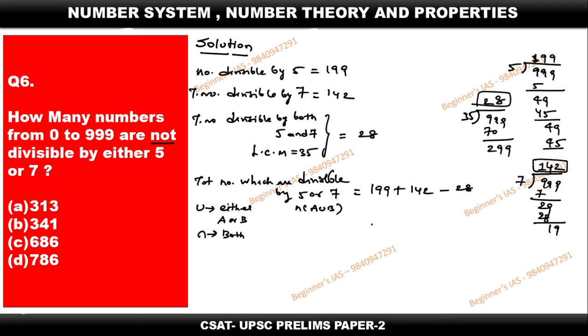Just subtract everything. 199 plus 142 minus 28. If you calculate this, you will get 313.